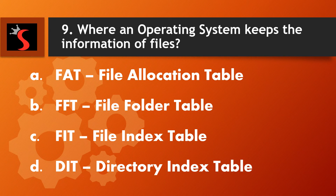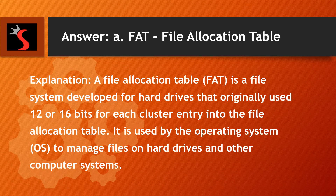The ninth question is: where does an operating system keep the information of files? A. FAT - File Allocation Table. B. FFT - File Folder Table. C. FIT - File Index Table. Or D. DIT - Directory Index Table. And the right answer is FAT - File Allocation Table. Explanation: a file allocation table is a file system developed for hard drives that originally used 12 or 16 bits for each cluster entry into the file allocation table. It is used by the operating system to manage files on hard drives and other computer systems.